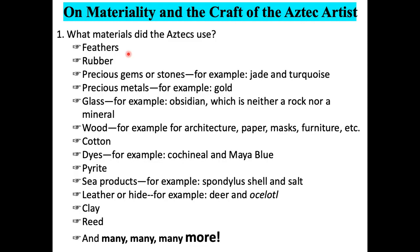What materials did the Aztecs use? They used feathers, rubber, precious gems or stones — for example, jade and turquoise — precious metals, for example gold, glass, especially obsidian, which is neither a rock nor a mineral. I'll show you a very short clip, a video that shows how they obtained it from nature and how they worked it. It's very difficult — I think you'll like this clip.